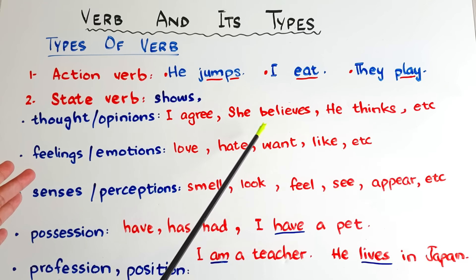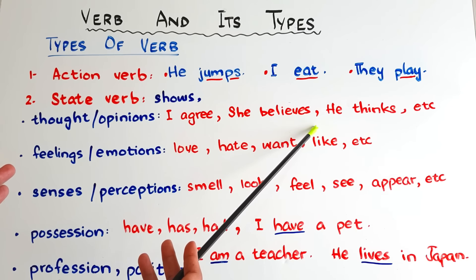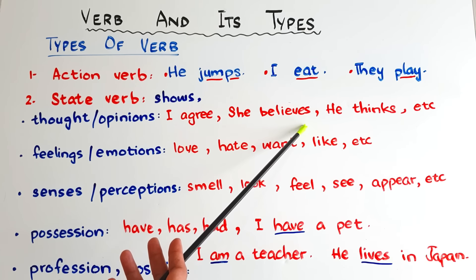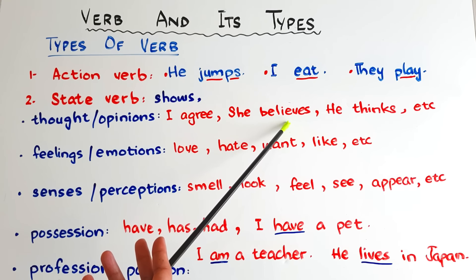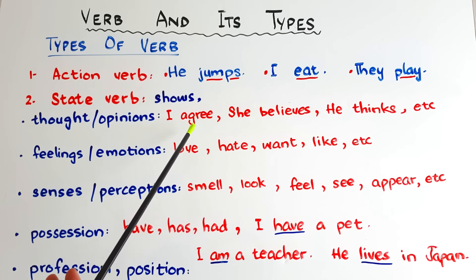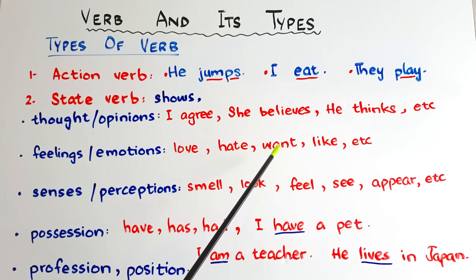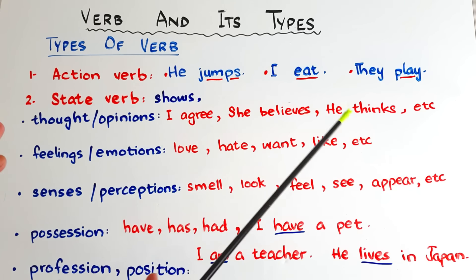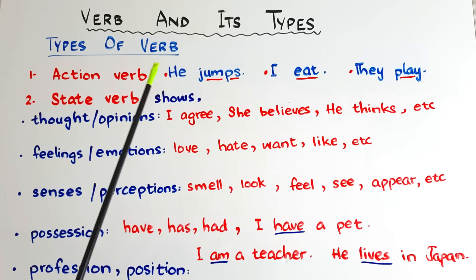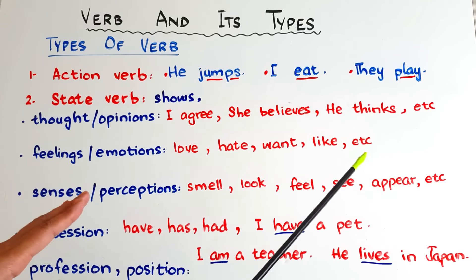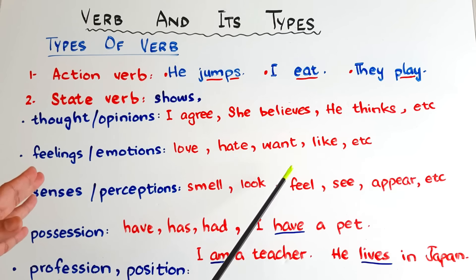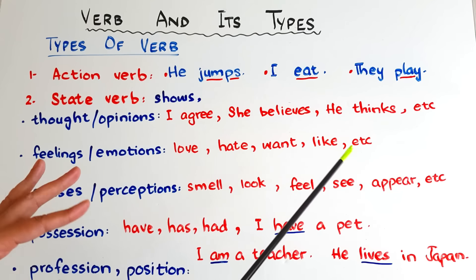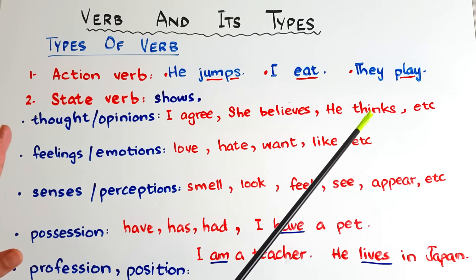It is really difficult to memorize all the state verbs, so what is the trick? Just think about a physical action. If the word is 'believe,' can you act it out? Can you think of an action that demonstrates 'believe,' or 'agree,' or 'want'? If you find a verb in a sentence, just think: is it showing a physical action, or is it simply a state? You will get it right.